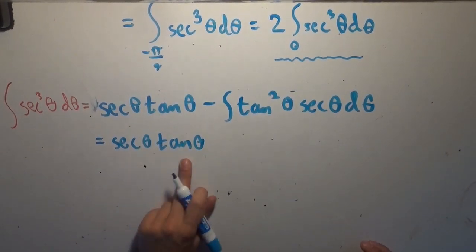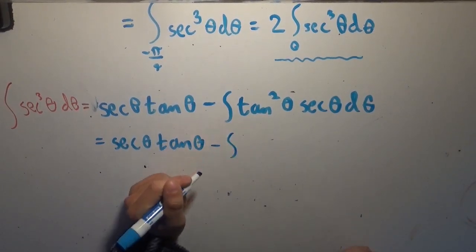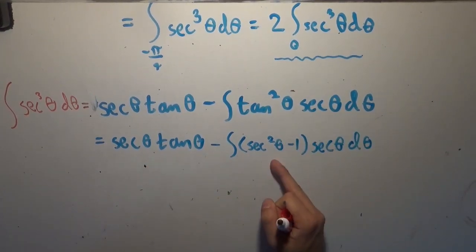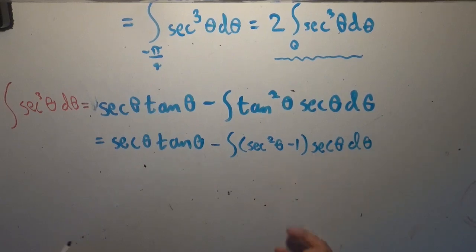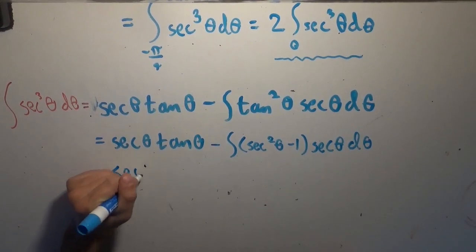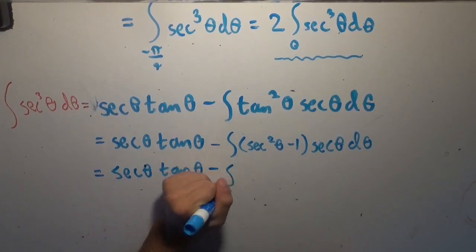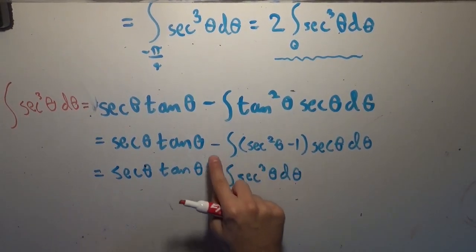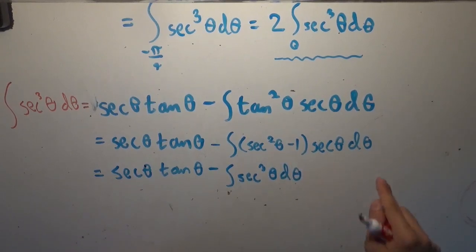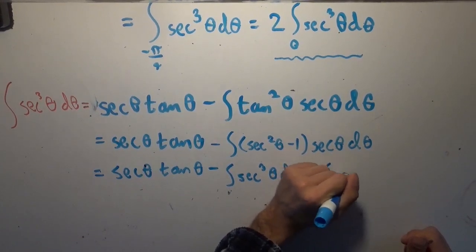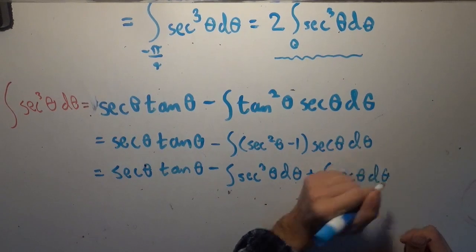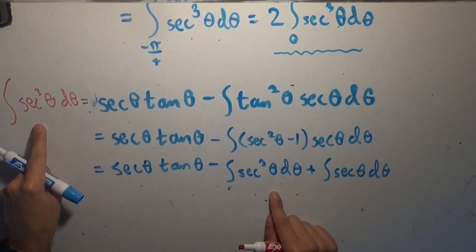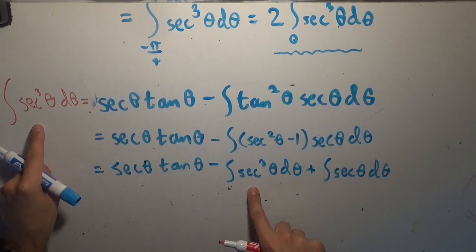So we end up with secant times tangent minus the integral of (secant squared minus one) times secant of theta d theta. Distributing the secant in and breaking up the integral into two pieces, we end up with secant of theta tangent of theta, minus the integral of secant squared times secant — which is secant cubed — minus minus secant of theta d theta. And we have that the integral of secant cubed is that expression minus the integral of secant cubed.